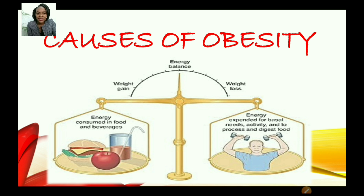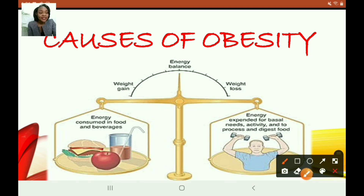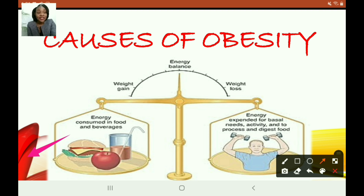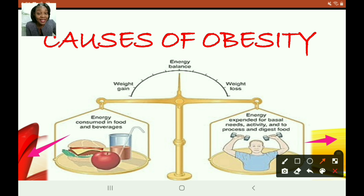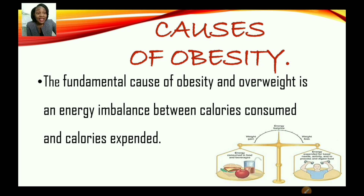Let us move on to causes of obesity. Based on this image, you can see a scale showing energy consumed in food and beverages balanced against energy expended for basal needs, activity, and to process and digest food. When there isn't a balance — when we're eating too much and not exercising — this is when persons become obese. The fundamental cause of obesity and overweight is an energy imbalance between calories consumed and calories expended.